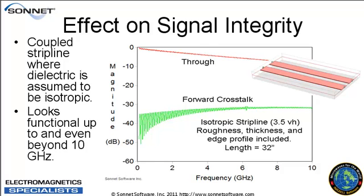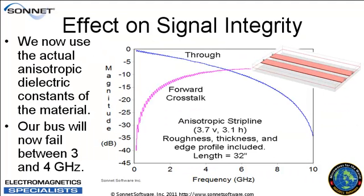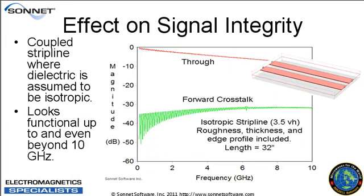Similarly, there are big effects on signal integrity. Here we've got a 32-inch server backplane simulated on FR4 with isotropic dielectric constants, and it looks good up to 10 GHz and maybe even beyond. But if we put actual anisotropic dielectric constants for FR4 into the simulation, all of a sudden the board looks like it's only good to maybe 3 or 4 GHz just because of anisotropy. That's a pretty significant and important effect.